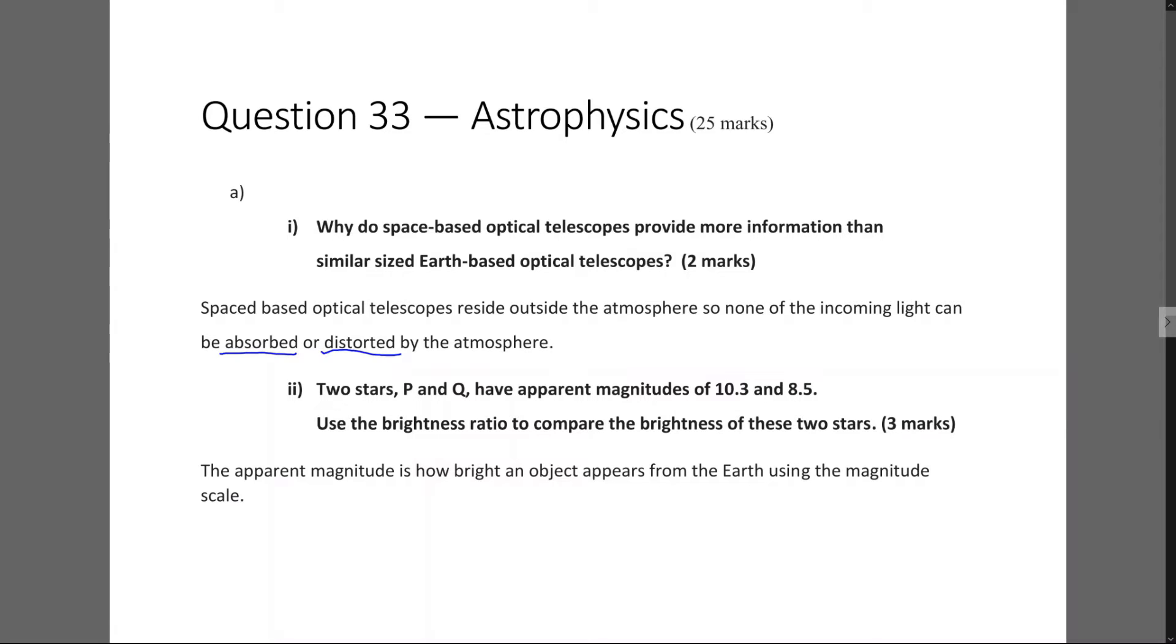The twinkling of stars that we see when we look up into the night sky is caused by the distortion of incoming light by the atmosphere, so that's the distortion effect. Similarly, some frequencies of visible light are also absorbed to different amounts by the atmosphere, so we actually don't see a completely accurate colour spectrum of the stars that we observe on earth as well. So when we have our telescopes outside in space, they are two things that we avoid.